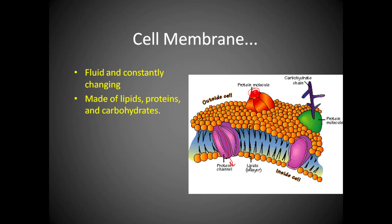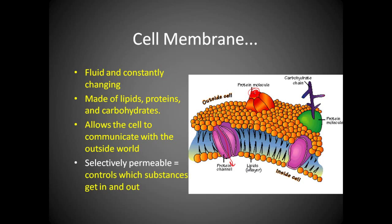Cell membranes are made of lipids, proteins, and carbohydrates, all organic molecules. The cell membrane allows the cell to communicate with the outside world and it's what we call selectively permeable. It's going to control which substances go in and out.